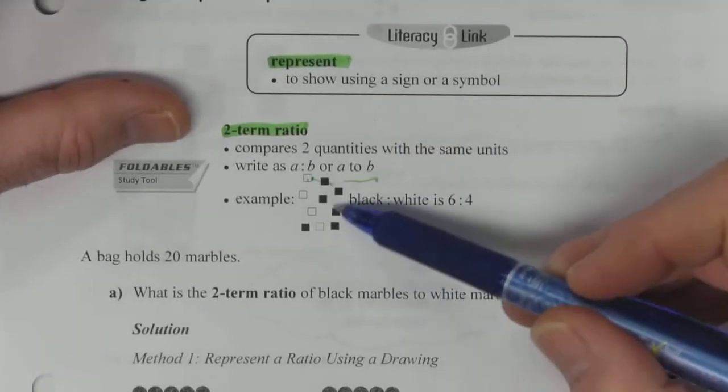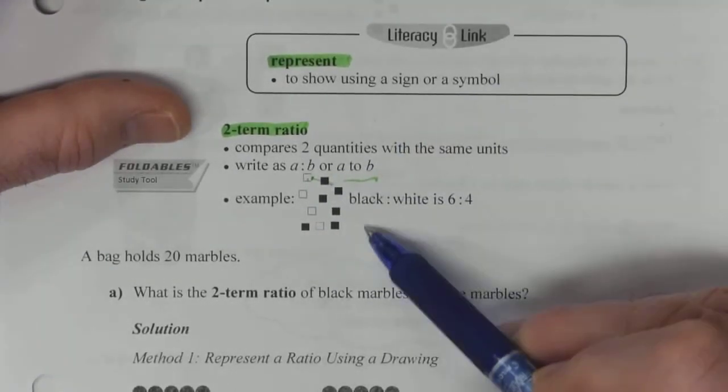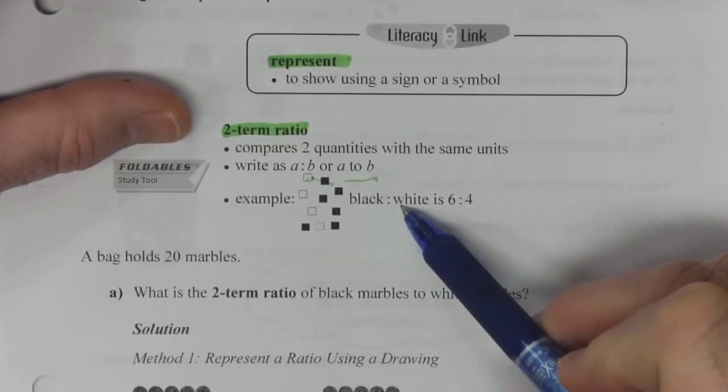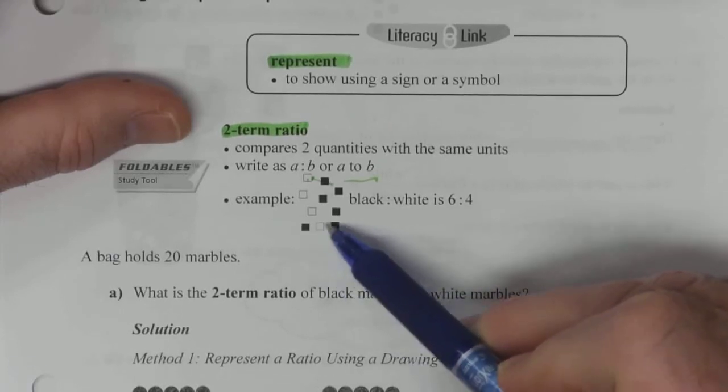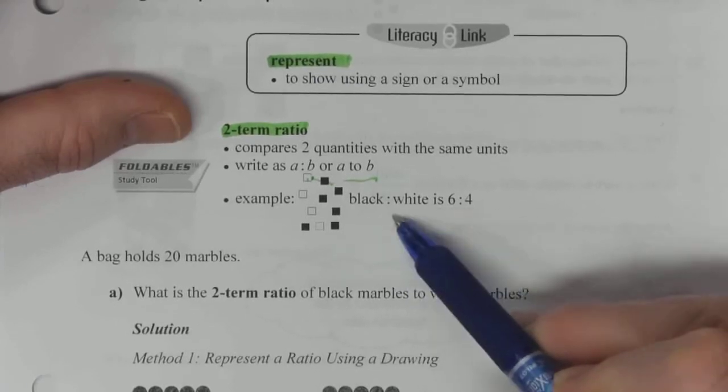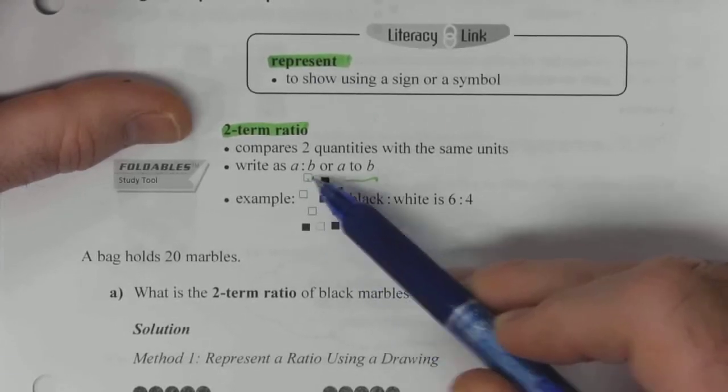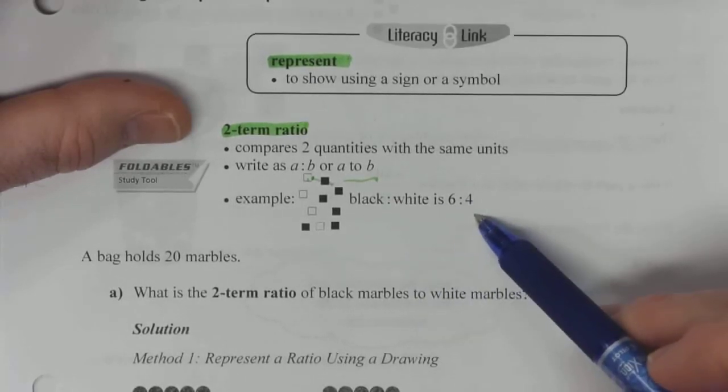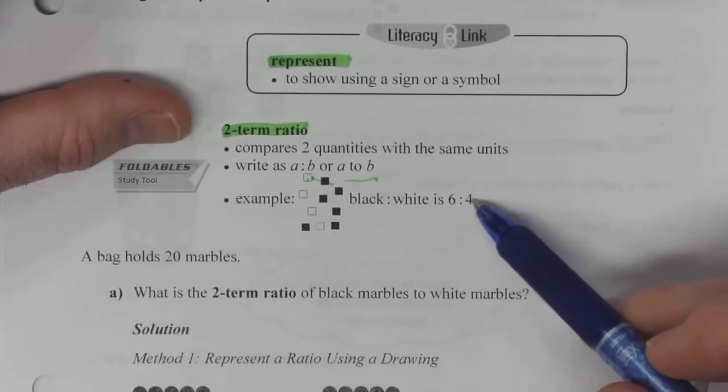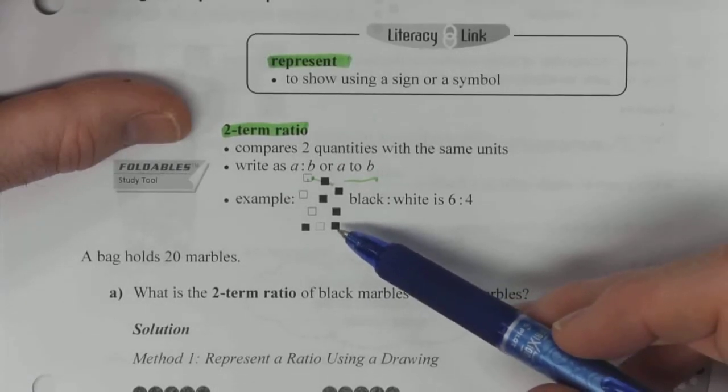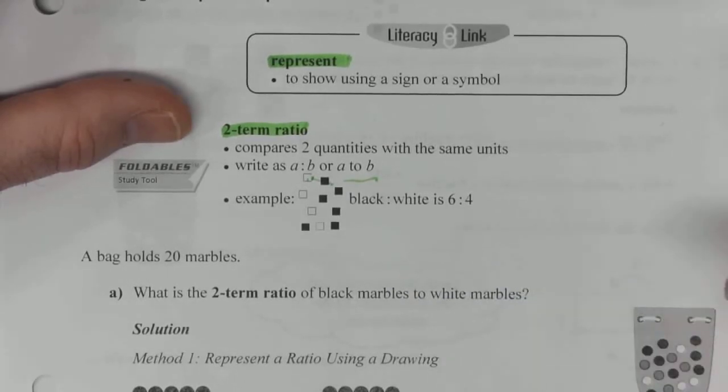So for example, here we've got all these different colored squares. We've got black to white. Now expressing two different quantities, black is one, two, three, four, five, six. So six black is the first number, white is the second number, and it's one, two, three, four. So six to four. So black to white is a six to four ratio. That's what we're working with here. So we've got two numbers that have the same units, and in this case, the units is just a box. So black to white is six to four.